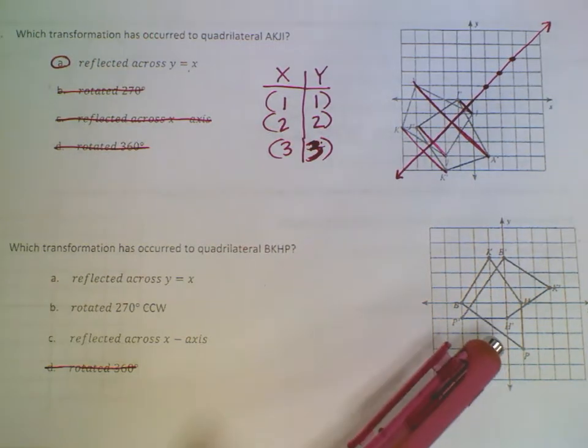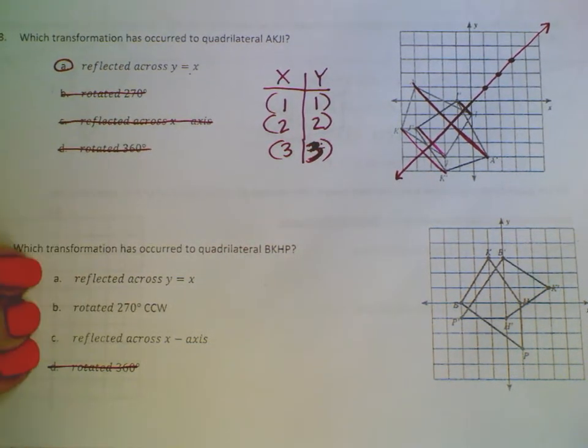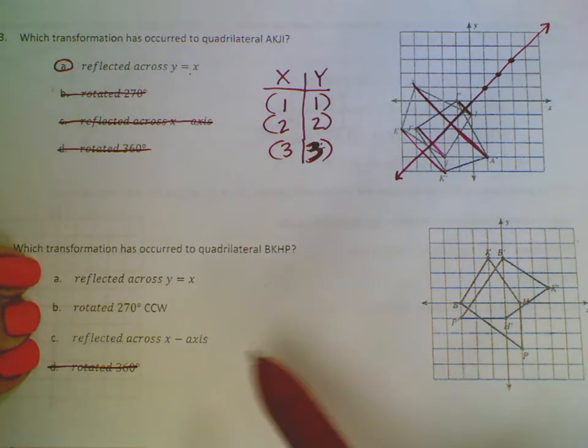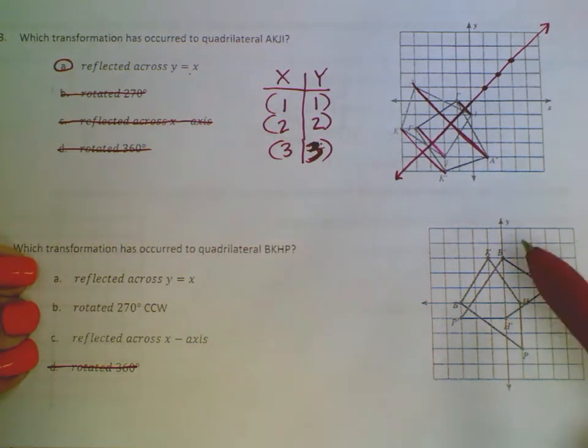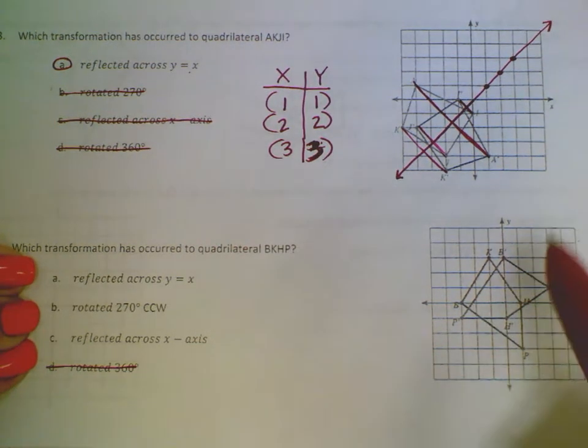These are in different places, that's not going to work out. So now I'm left with three different options. If I had reflected my original, which is this one right here, across the x-axis...